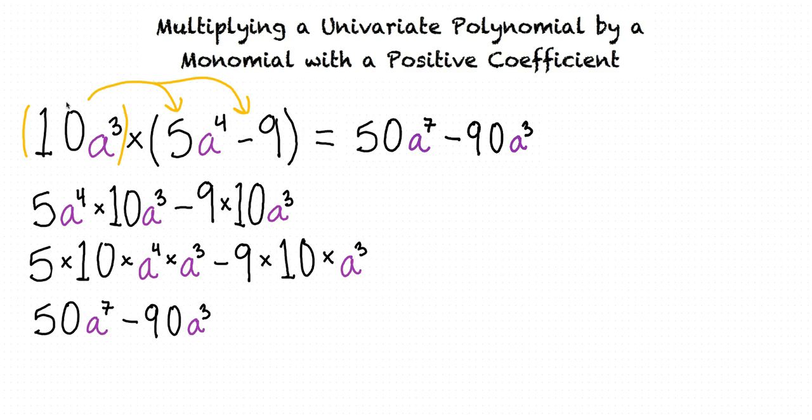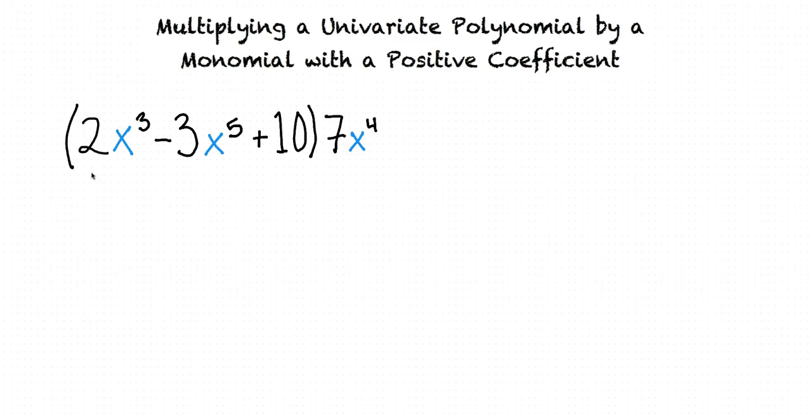So to use the distributive property to remove parentheses, we distribute the term outside of the parentheses to each term inside the parentheses, then simplify. Right. Let's do one more example. 2x cubed minus 3x to the fifth plus 10, all in parentheses, times 7x to the fourth.